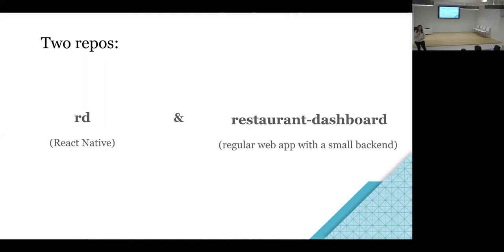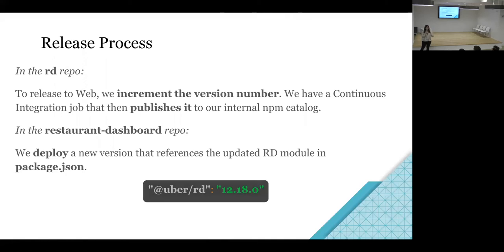The restaurant-dashboard repo is a pretty simple web app. It has a small backend that basically just serves down the app and proxies all the network requests to our regular backend that our native mobile app would talk to more directly. In terms of releasing: in the RD repo, we merge to master a new version and increment the version number. A continuous integration job publishes it to our internal NPM catalog, so it's really just an NPM module that's the whole app. Then in the restaurant-dashboard repo, all we have to do is deploy a new version that references this new version of the tablet app — we just update the version number in package.json.